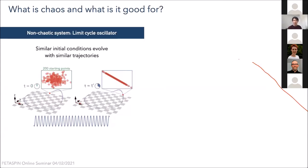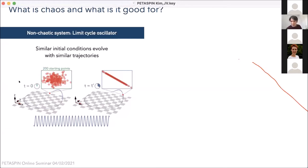We can contrast this to a chaotic system — shown here is an example for the Rössler system, again a three-dimensional representation of the phase space. If we begin with that initial set of closely spaced points, after a certain time these points disperse out in space and we are left with trajectories that diverge very quickly. So if we think about what kind of output signal one might get from the system, we have this blue line shown on the bottom.